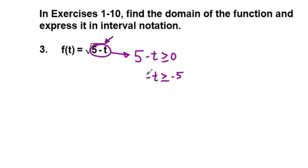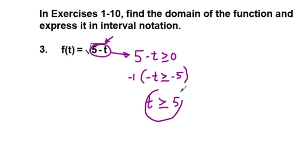If we subtract 5 from both sides of this inequality, we get negative t is greater than or equal to negative 5. If we multiply both sides by negative 1 — and remember, when we multiply or divide by a negative number to solve an inequality, we have to change the direction of the inequality — we get t is less than or equal to 5.